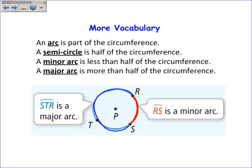And those letters are the endpoints of our arc. So you can call it arc RS or arc SR. Those are both minor arcs.